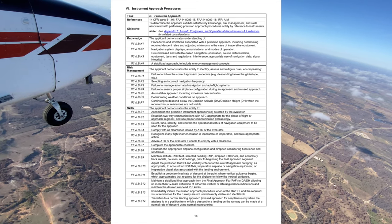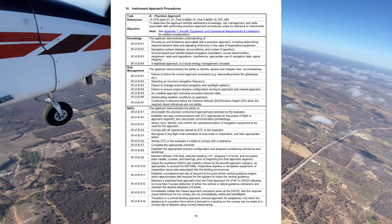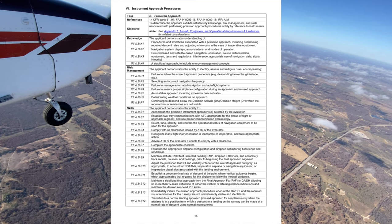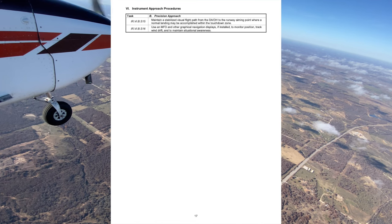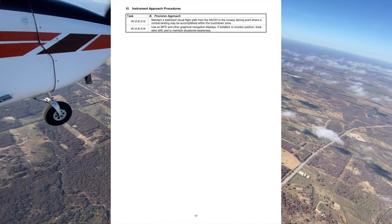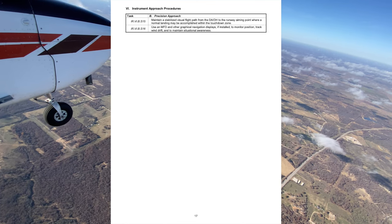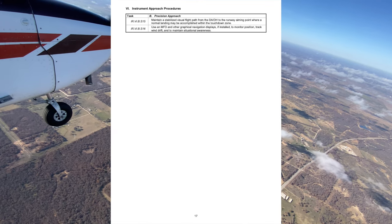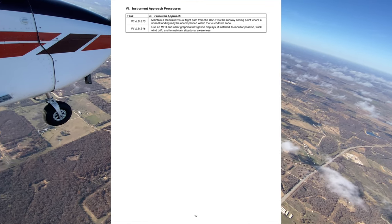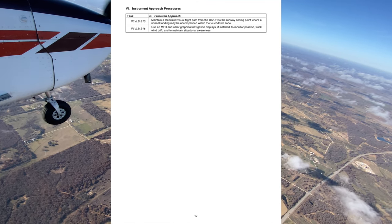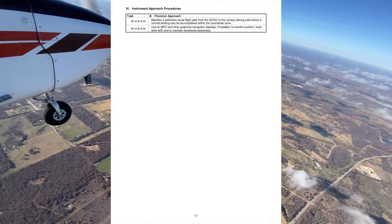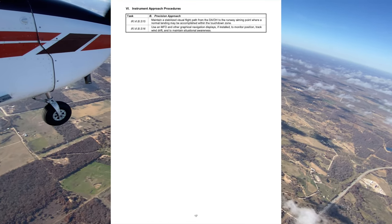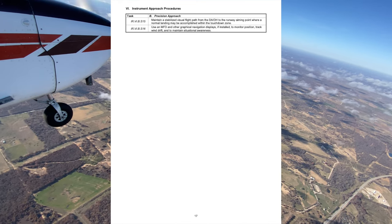When can you descend below the DA or MDA? Per 91.175, all three conditions must be met: the aircraft is in a continuous position to land making normal maneuvers and a normal rate of descent on the intended runway; flight visibility is not less than the visibility prescribed in the standard instrument approach; and you must have at least one of the following in sight — the threshold, threshold markings, threshold lights, REILs, VASI, touchdown zone, touchdown zone markings, touchdown zone lights, runway, runway markings, or runway lights.